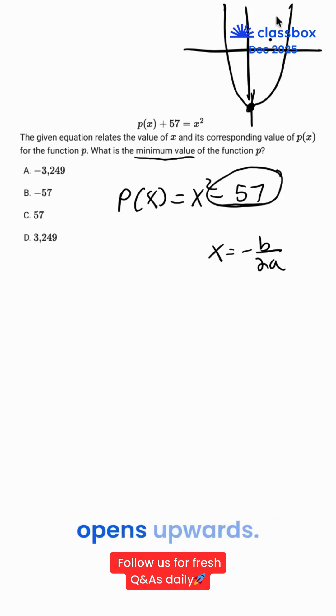As we can see, our vertex is minimum value as it opens upwards. So what is our minimum value of the function? It would be negative 57.